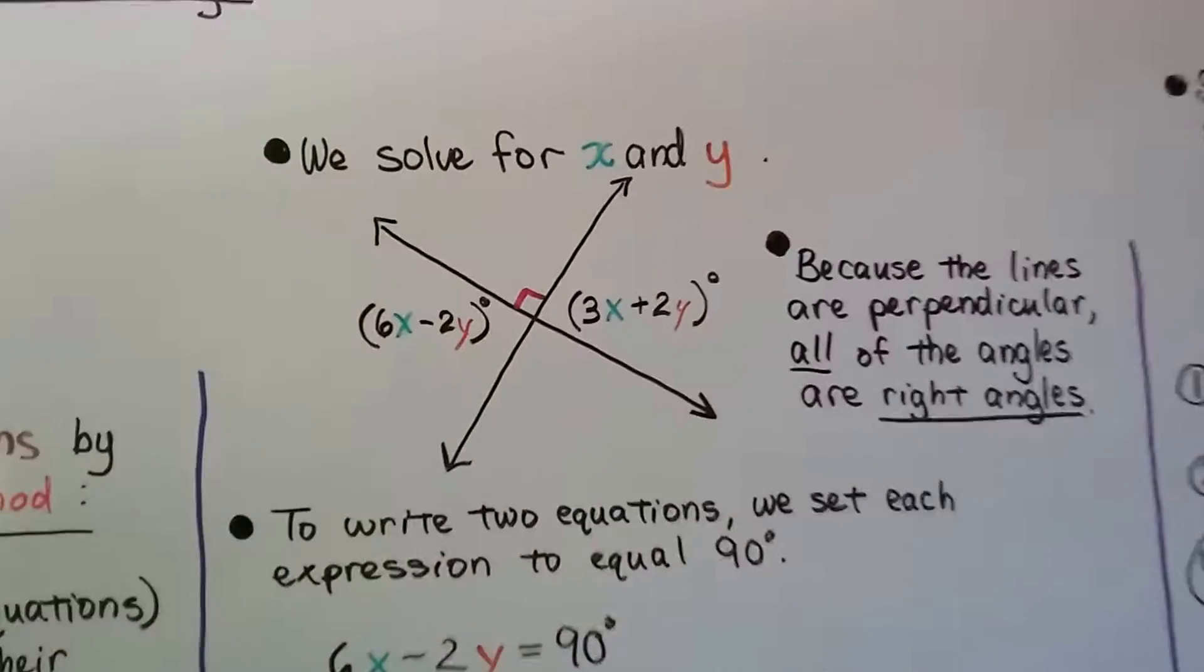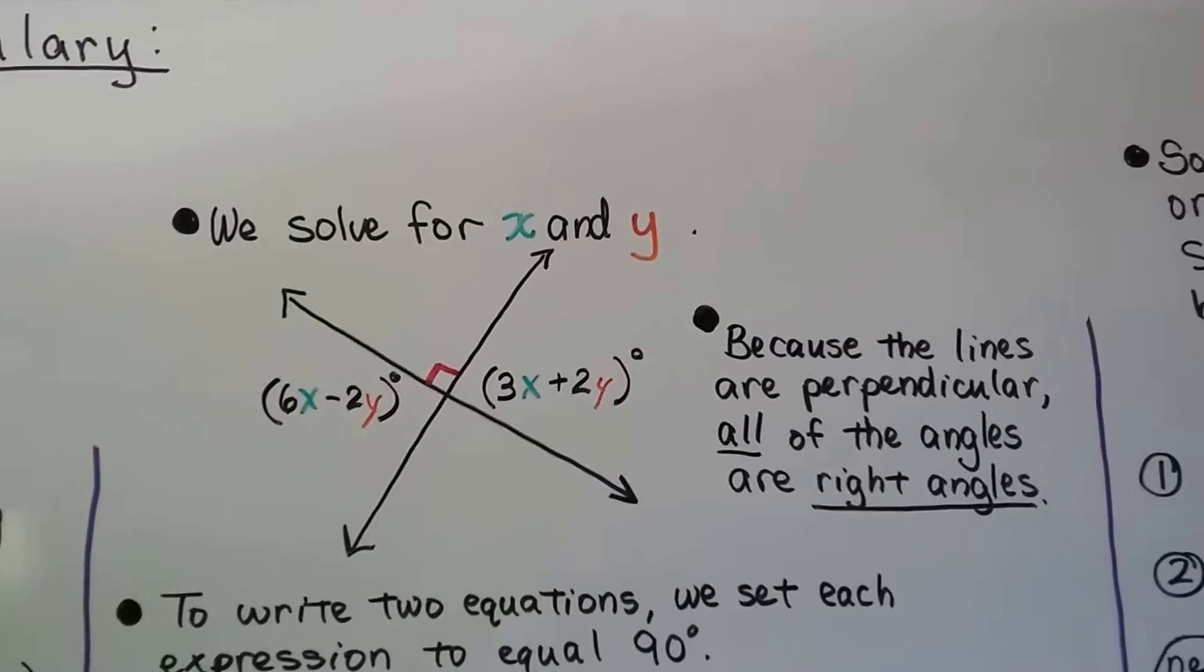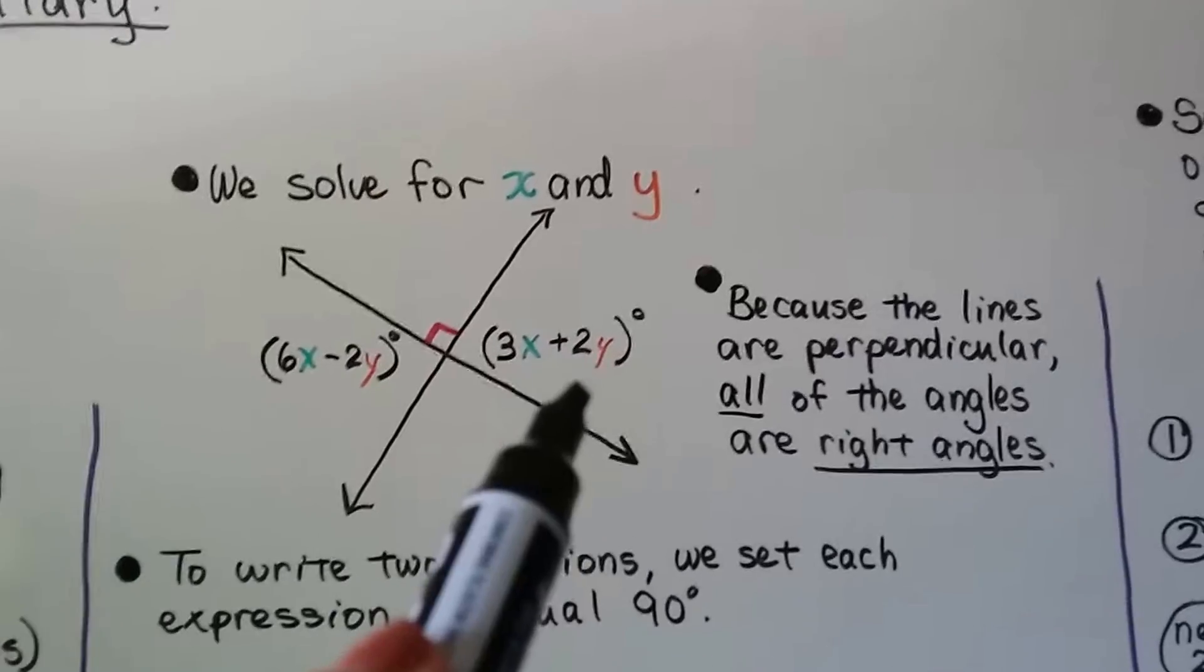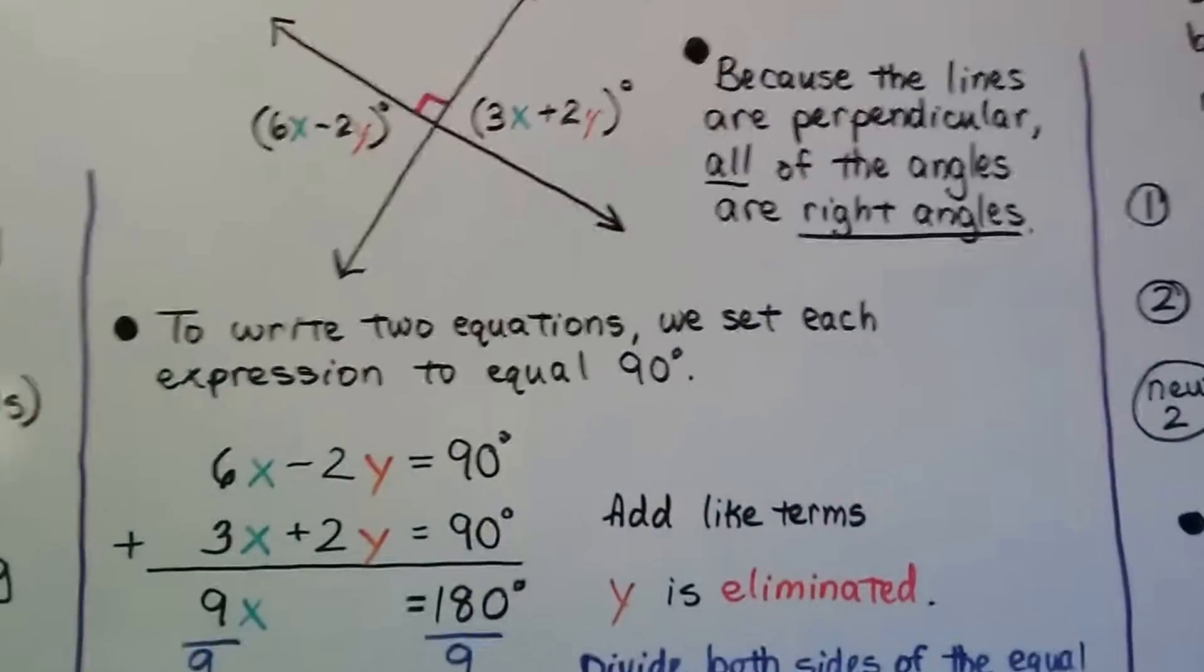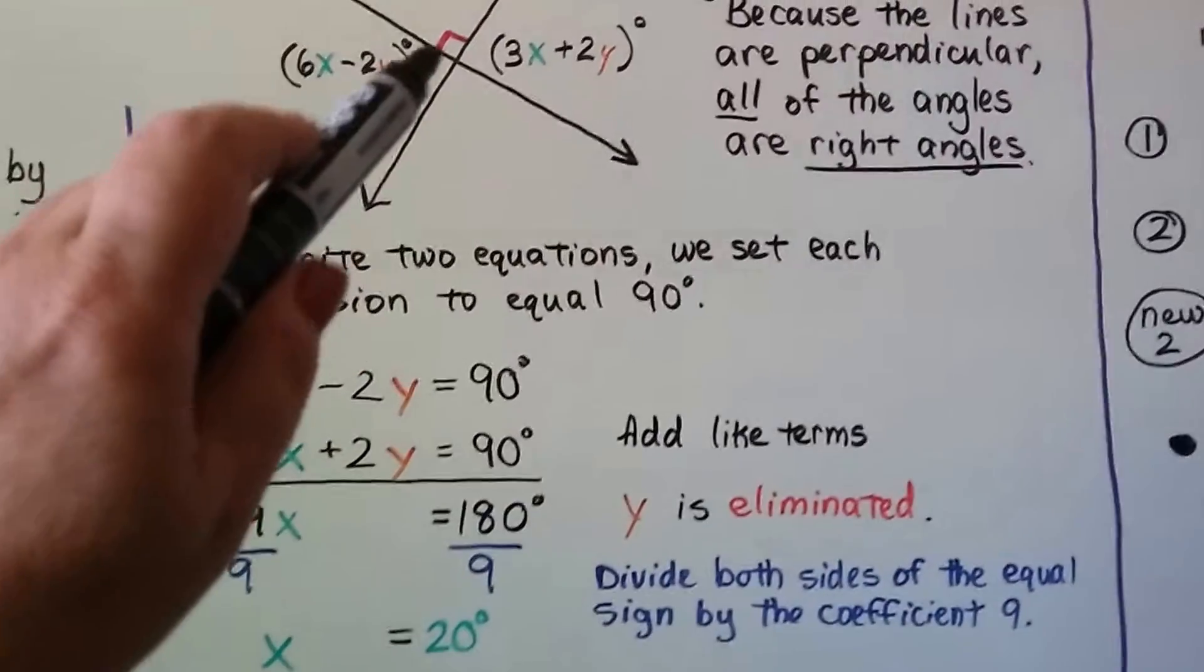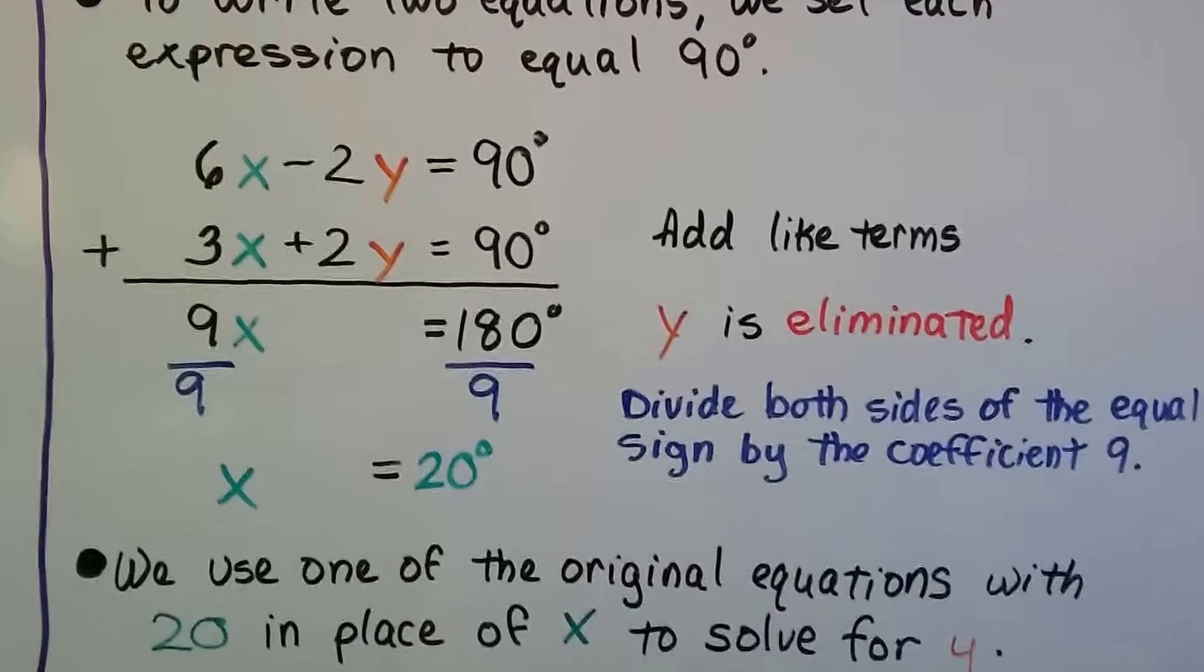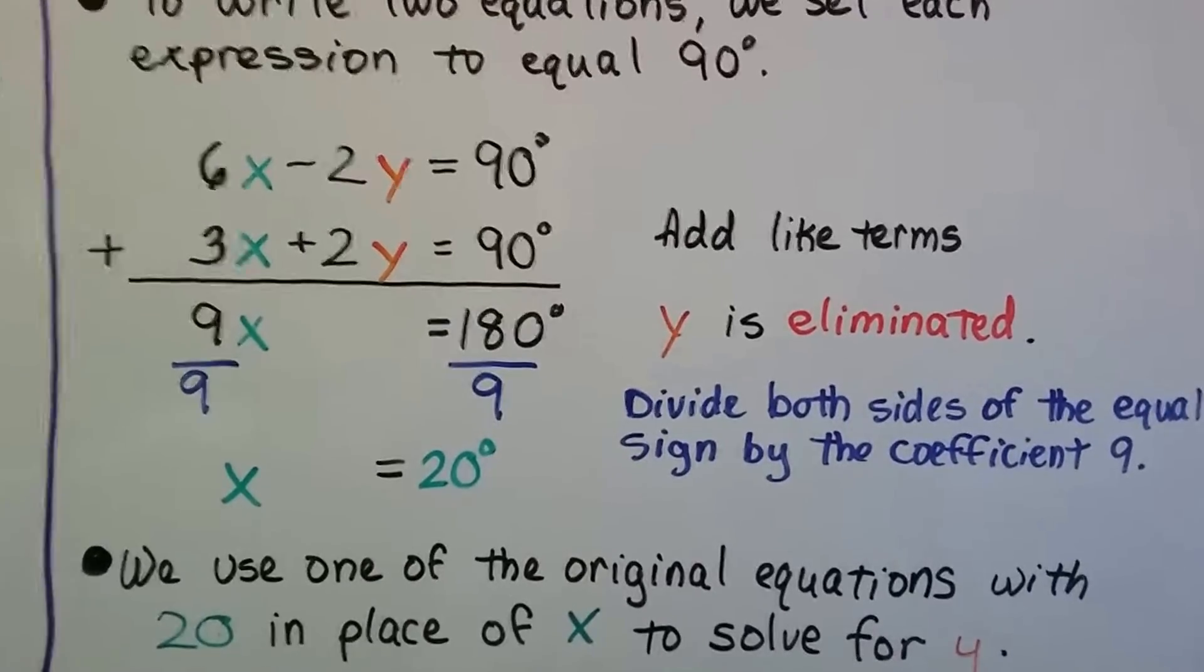So, take a look at this diagram. We solve for x and y, and because the lines are perpendicular, all of the angles are right angles. So, we know that 6x minus 2y degrees is 90 degrees. We also know 3x plus 2y degrees is 90 degrees. And to write two equations, we set each expression to equal the 90 degrees. We see this little box here. We know they're 90 degrees. We know those lines are perpendicular. We stack the two equations and line up their variables. So, we have 6x minus 2y equals 90, and 3x plus 2y equals 90.